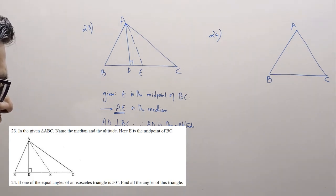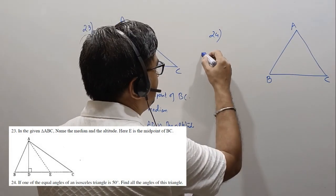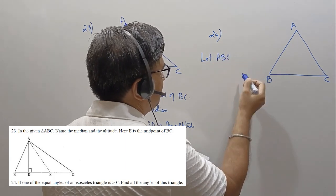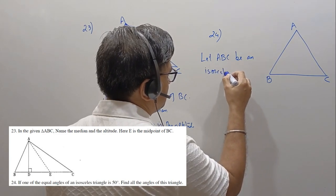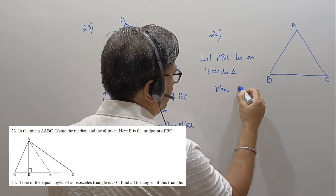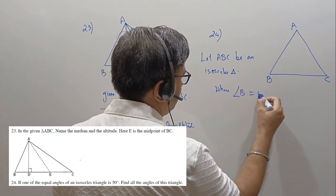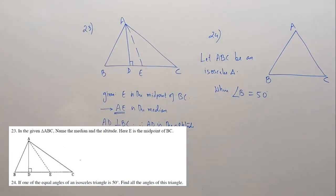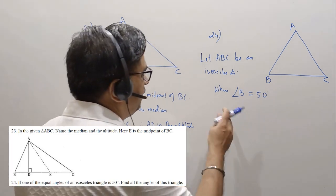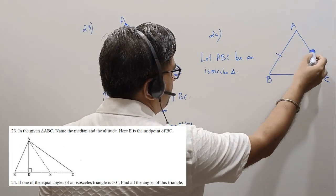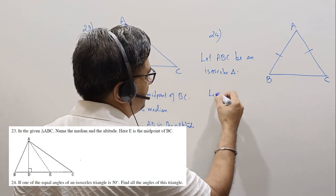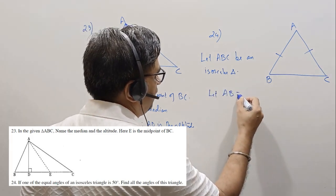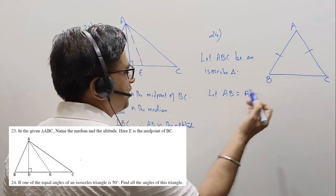Coming to question number 24. It's given that this is an isosceles triangle. Let ABC be an isosceles triangle where angle B is 50 degrees. In an isosceles triangle, two sides are equal. So let AB equal AC. Because it's an isosceles triangle, two sides are equal.